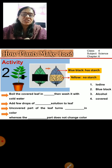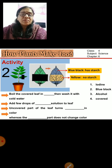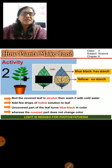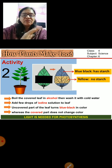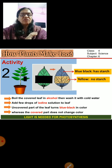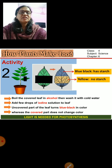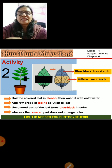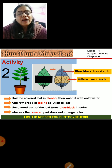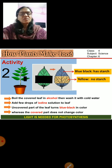The covered part does not change color. This proves that the covered part of the leaf has not undergone the process of photosynthesis. The uncovered part is blue-black while the covered part remains yellow, with no starch present. This also proves that light is needed for photosynthesis.